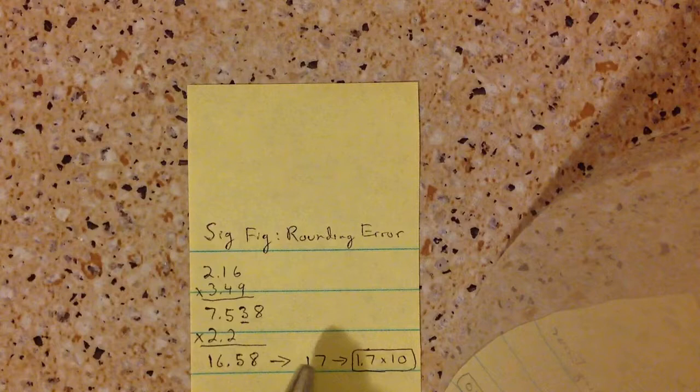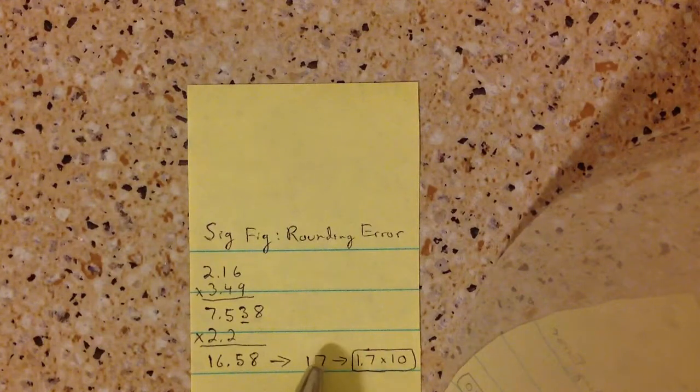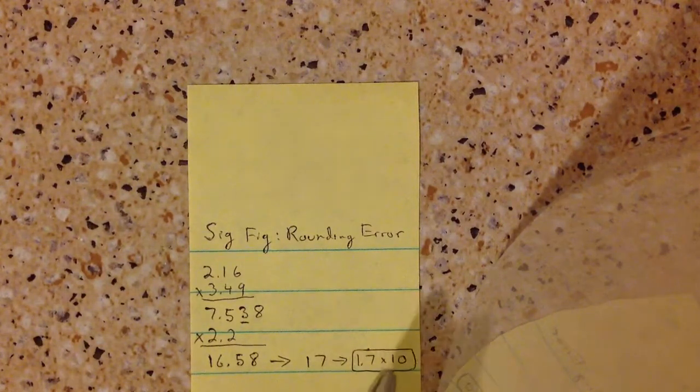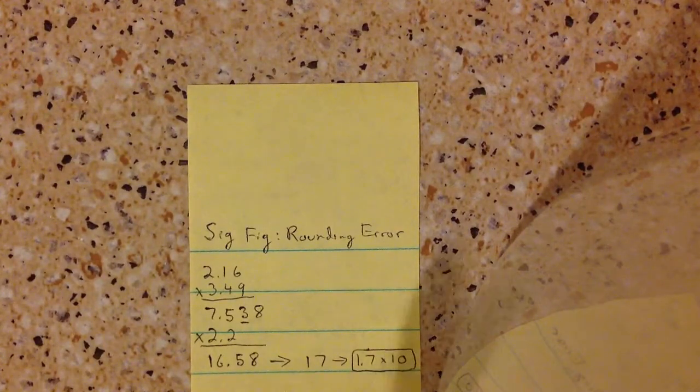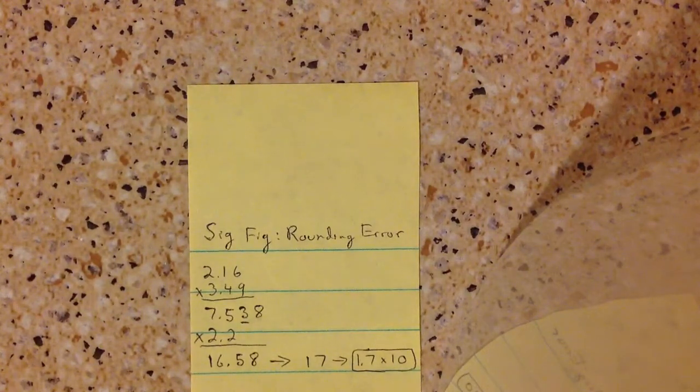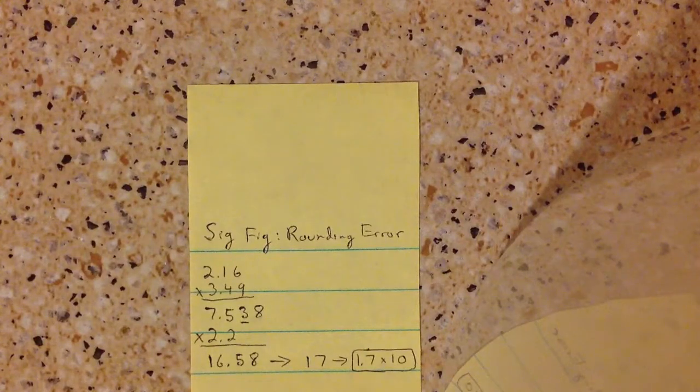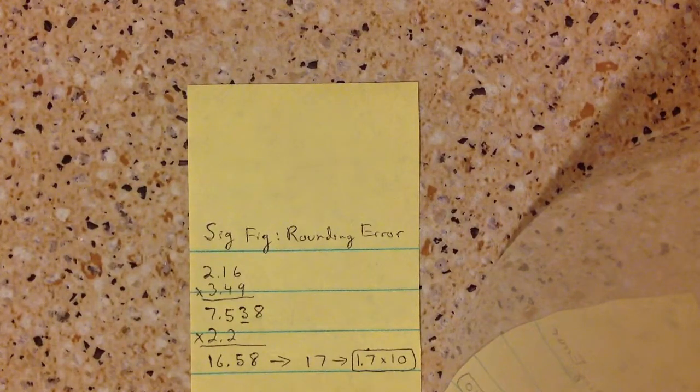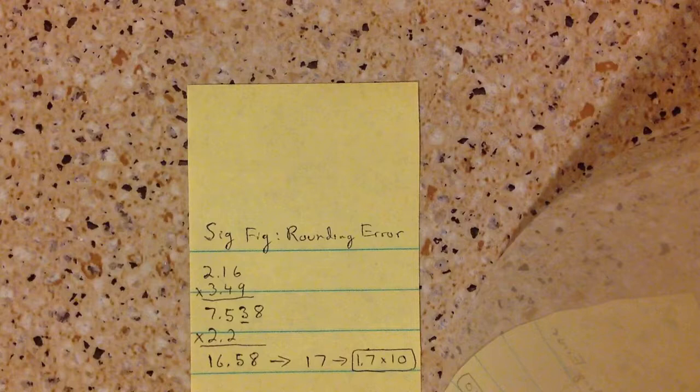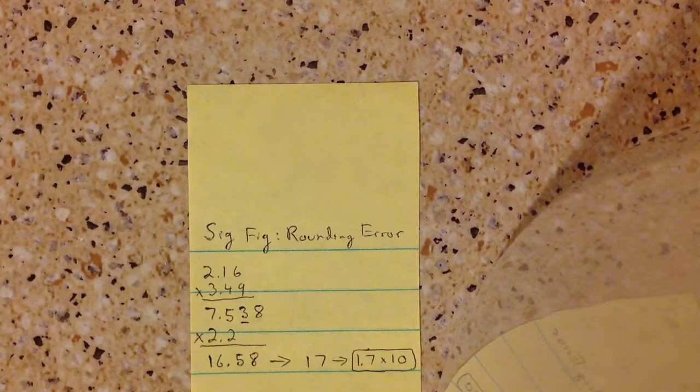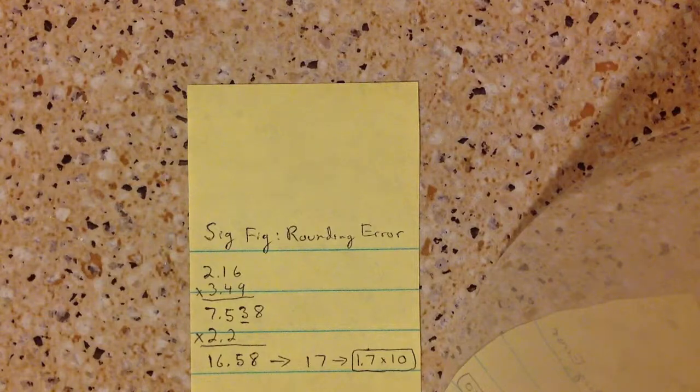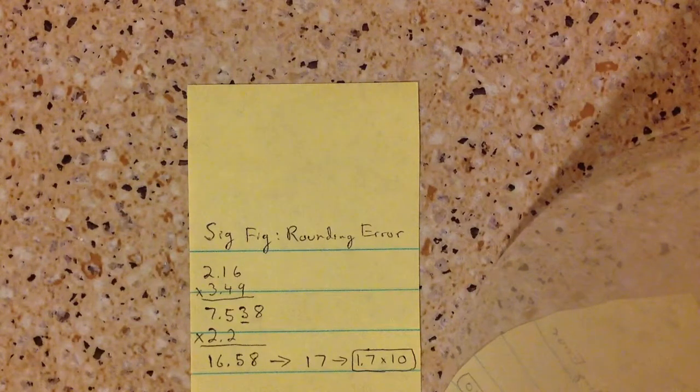So now since it's 17, it's usually just good practice to put into scientific notation because we want 2 sig figs. So then we get 1.7 times 10. So in general, just keep one additional sig fig. Like if you have 3 sig figs, keep 4 sig figs, and then you can continue with your calculation.